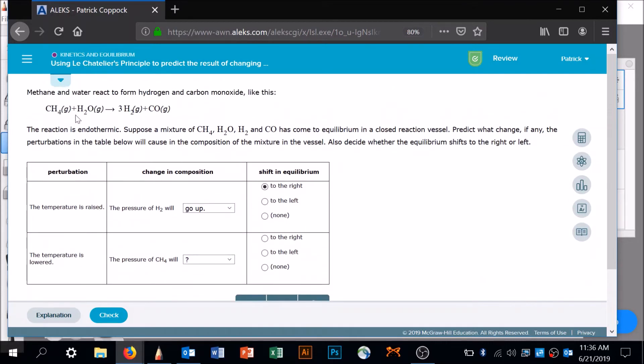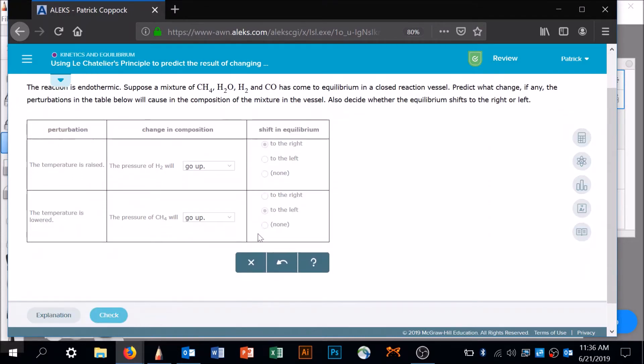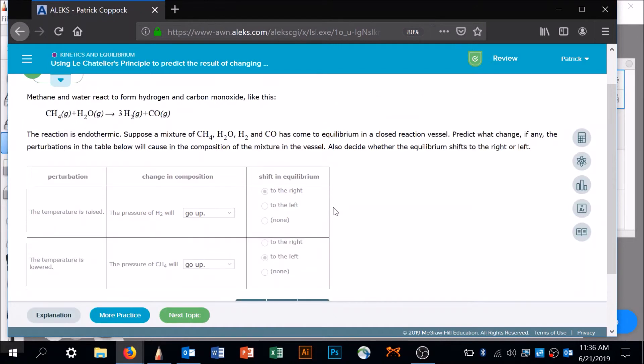What if the temperature's lowered? If the temperature's lowered and it's endothermic - remember, endothermic here - the system's going to respond to restore equilibrium. It's going to push things toward the heat if the temperature's lowered, so it's going to go to the left. The pressure of methane is going to go up. It's just that simple. Let's do another one.